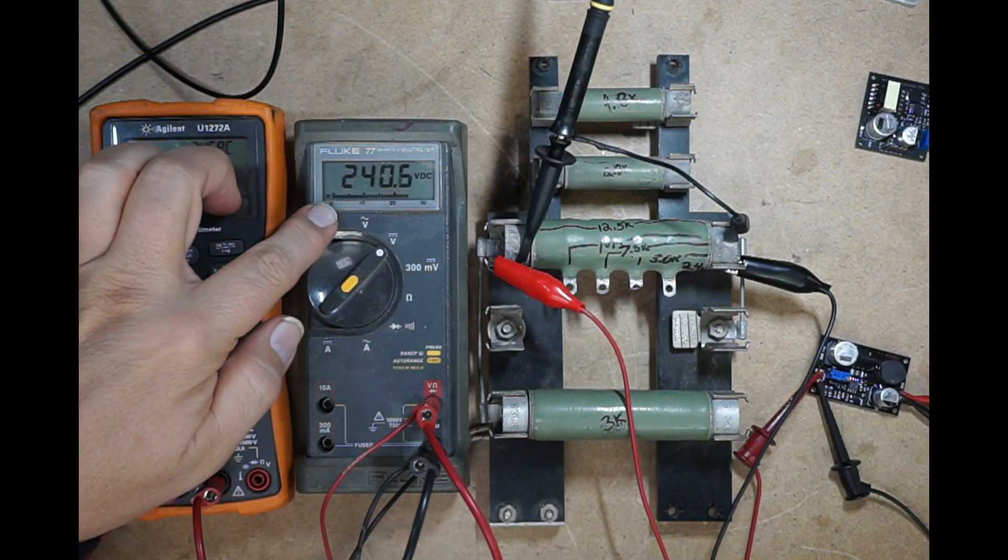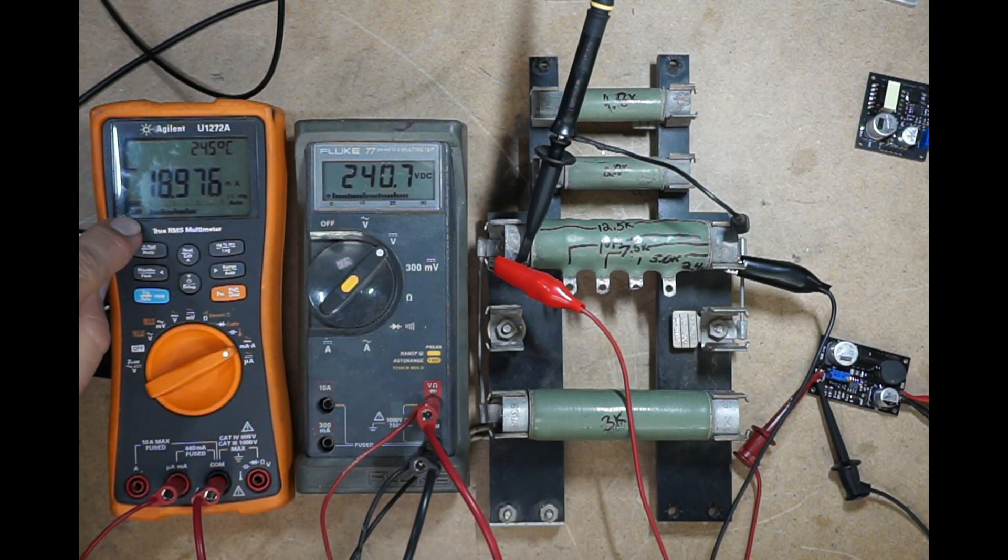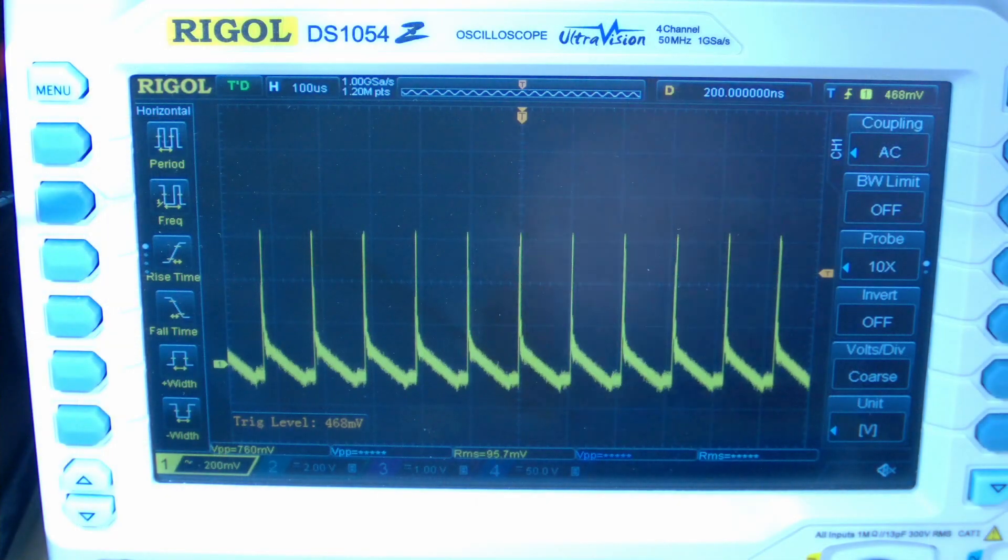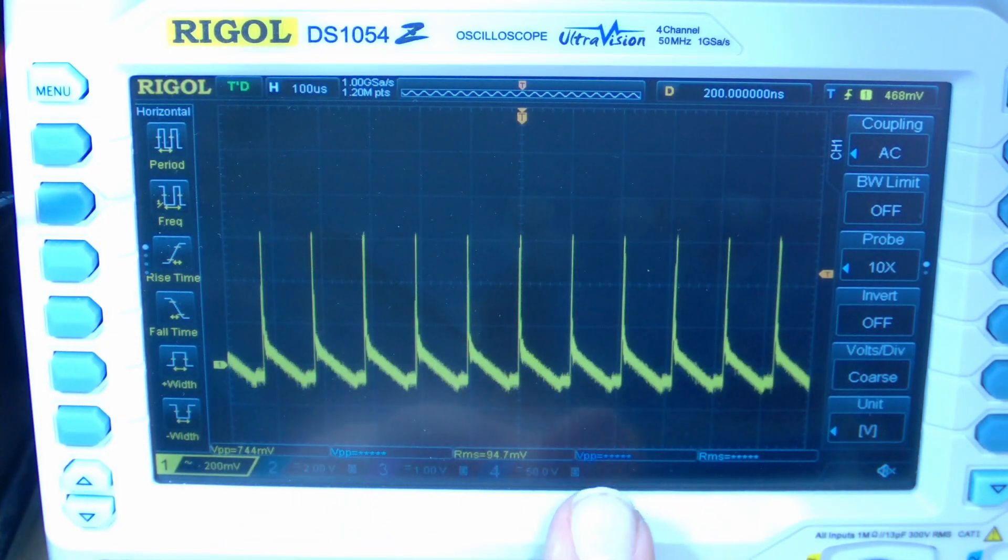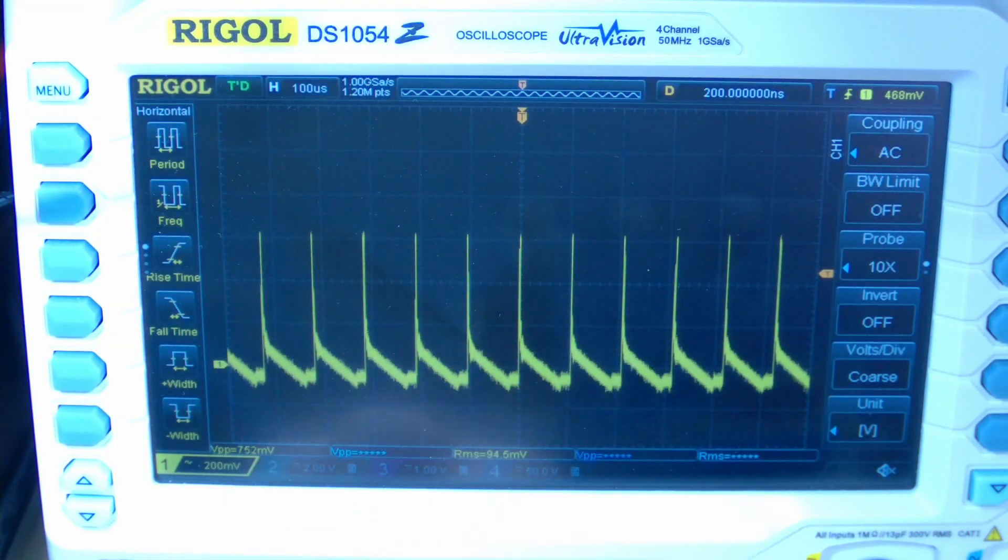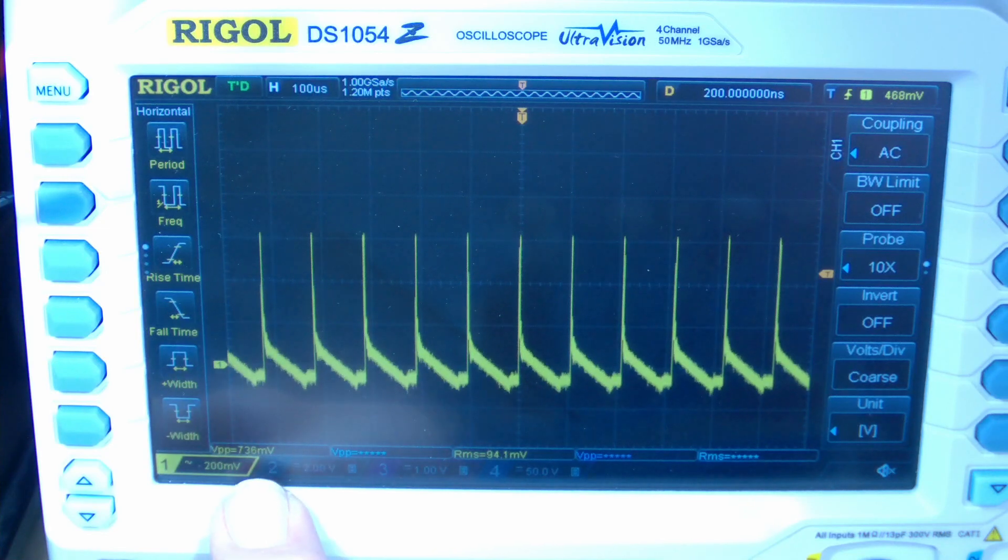And you can see that we're getting out 240 volts at about 19 milliamps. So this is the output waveform. You can see we've got some pretty big spikes, and that looks like that peak to peak on that spike is about 700 millivolts.